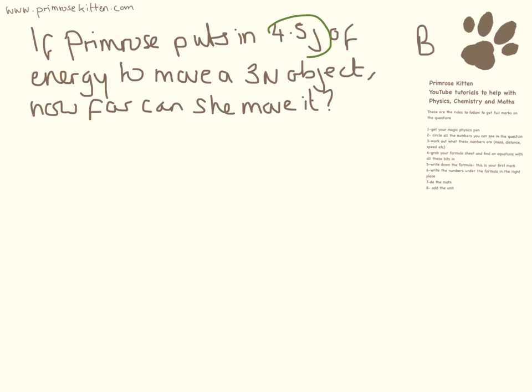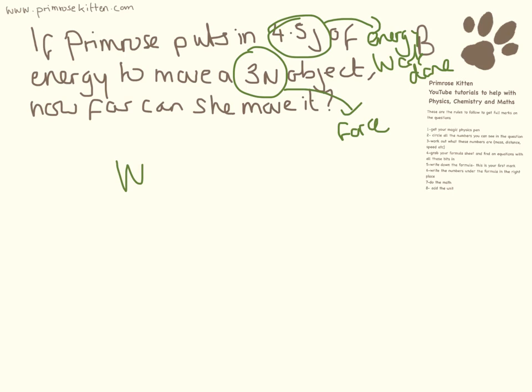Okay, if Primrose puts in 4.5 joules of energy to move a 3-newton object, how far can she move it? This is energy, and this is force. This is a slightly tricky question here, because energy here isn't kinetic energy, isn't gravitational potential energy, is actually work done. So this is one of the ones in the exam, you're really going to have to use what you know to work out which equation we're going to be using. We're going to be using work done equals force times distance.